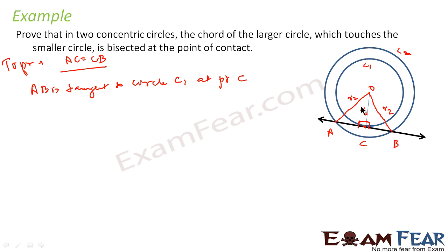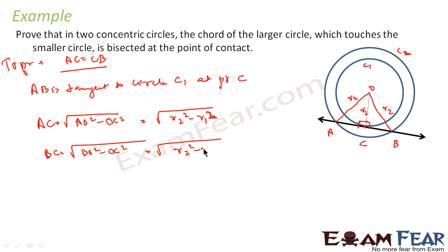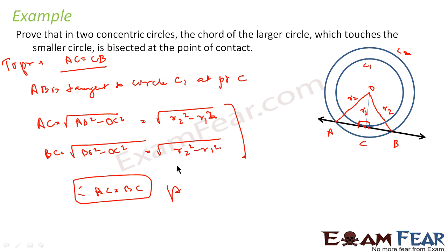Now, using Pythagoras theorem directly, AC is nothing but root of AO squared minus OC squared, in triangle AOC — which is root of R2 squared minus R1 squared. Similarly, BC is root of BO squared minus OC squared, which is also root of R2 squared minus R1 squared. Both values are the same, so we can say that AC is equal to BC, and that is what we were supposed to prove.